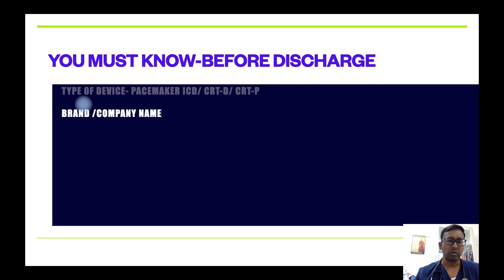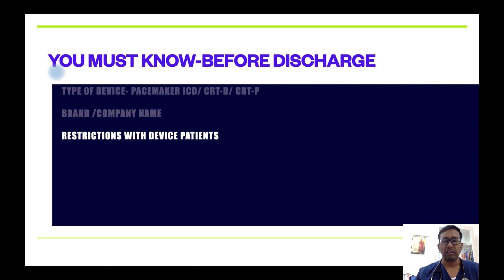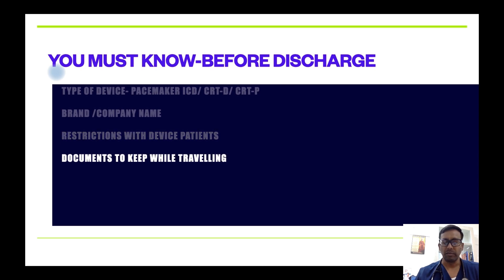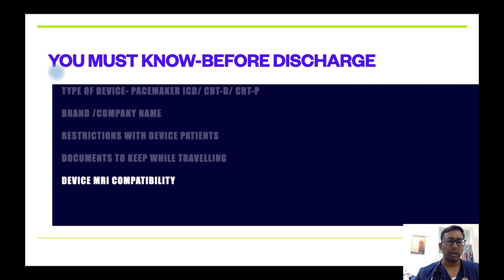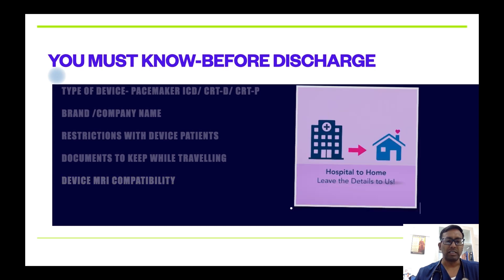When the device has been implanted, you should know five things: the type of device — whether pacemaker, ICD, CRT, CRTD, or CRTP; the brand and company name; the restrictions after implantation; the documents to carry while traveling; and whether your device is MRI compatible. These five questions should be answered before discharge.